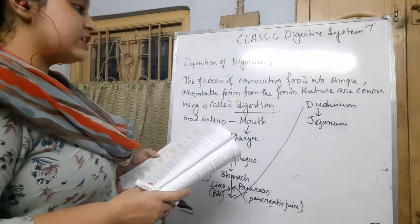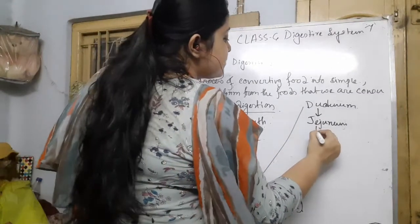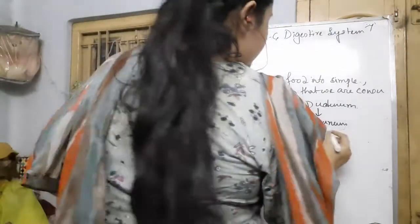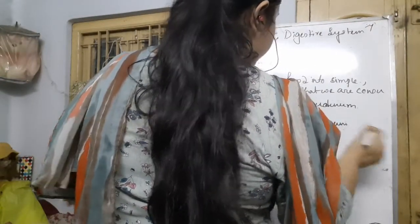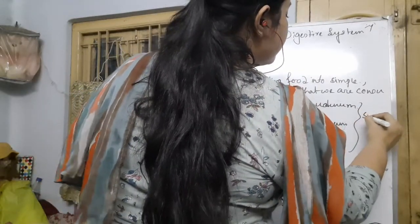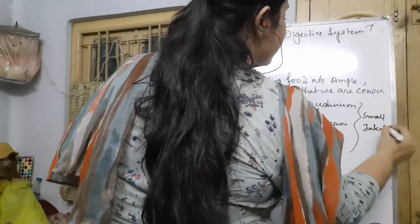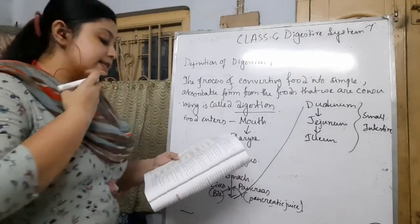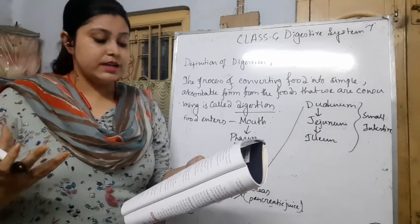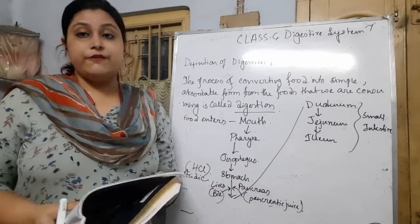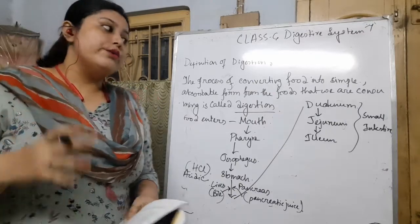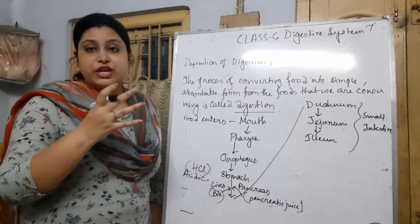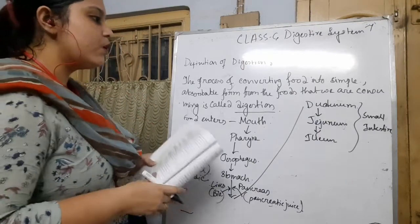Finally the last part is the ileum, which is the last part of the small intestine. These three — duodenum, jejunum, and ileum — are the parts of the small intestine. In the ileum, intestinal juice is secreted and digestion also continues. Completely digested foods are absorbed through the villi, which are the finger-like projections present in the inner wall of the ileum and throughout the small intestine.